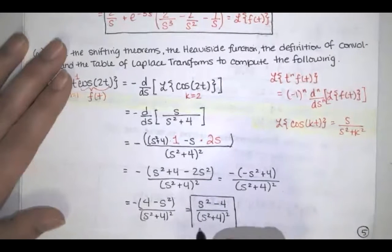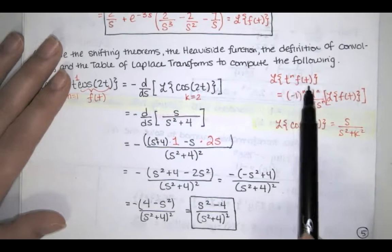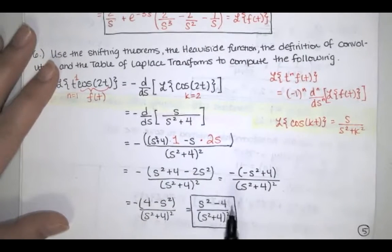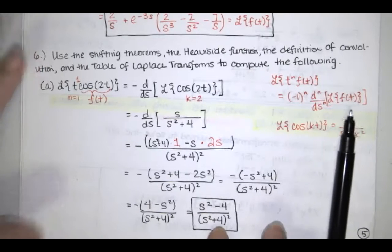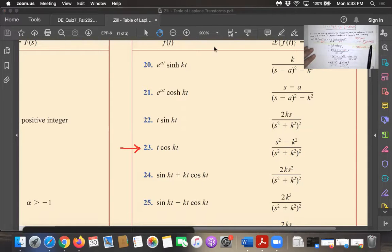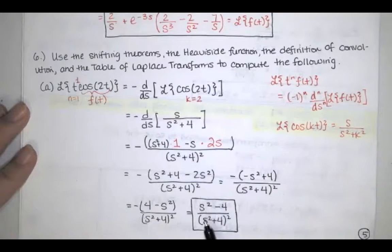Now let's confirm using the table. Entry number 23 gives t times cosine of kt as s squared minus k squared over s squared plus k squared quantity squared. With k equal to 2, that's s squared minus 4 over s squared plus 4 quantity squared — exactly what we got using the derivative of transform theorem. You can either directly apply the table rule or use this theorem, and either way you get the same answer.